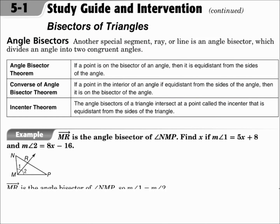Angle bisectors are another special segment, ray, or line that divides an angle into two congruent angles. The angle bisector theorem says that if a point is on an angle bisector, then it's equidistant from the sides of the angle. The converse of that is also true. The incenter theorem says that the angle bisectors of a triangle intersect at the incenter, which is equidistant from the sides of the triangle.